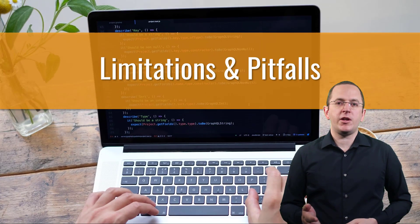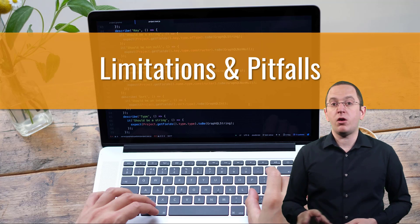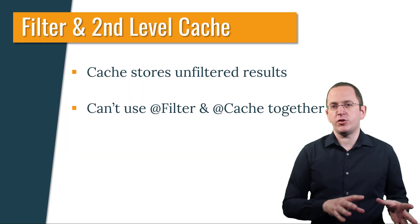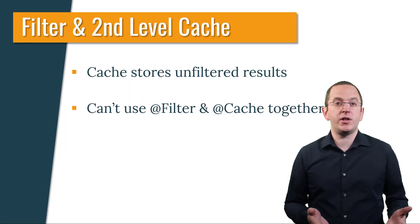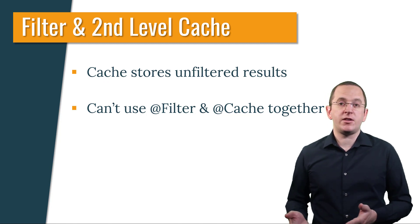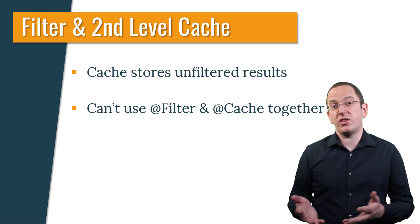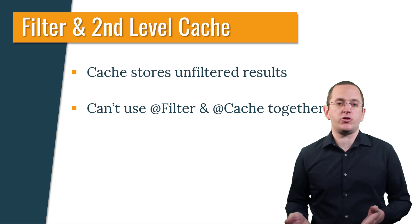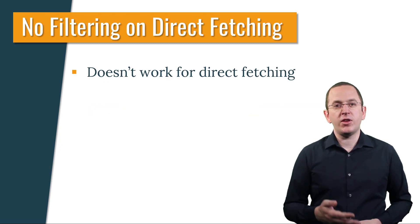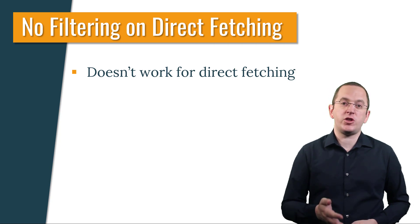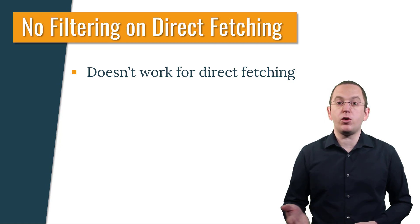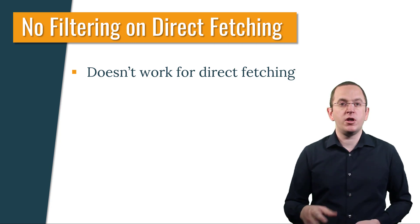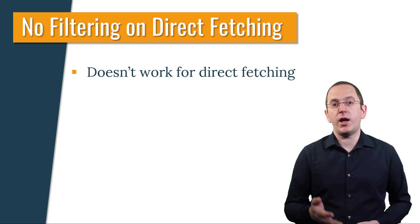Before you start using Hibernate's filters in your application, you should be aware of 2 limitations that cause issues in many applications. Hibernate's second-level cache is independent of your current session and its specific filter settings. To ensure that an activated filter doesn't cause inconsistent results, the second-level cache always stores the unfiltered result, so you can't use the @Filter and @Cache annotations together. Additionally, Hibernate only applies the filter to entity queries, but not if you are fetching an entity directly, for example by calling the find method on the entity manager. Due to that, you shouldn't use a filter to implement any security feature, and you should check your application carefully for any direct fetch operations.